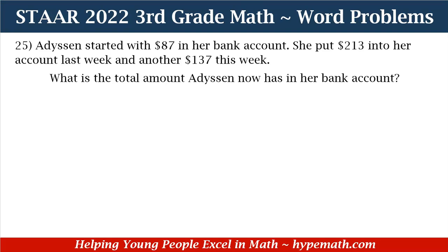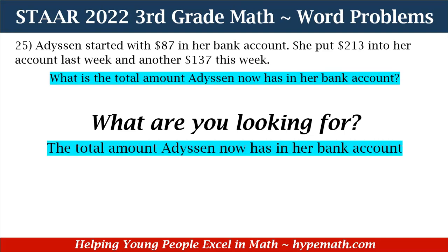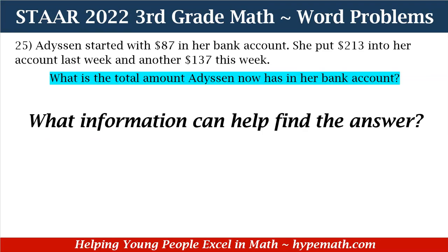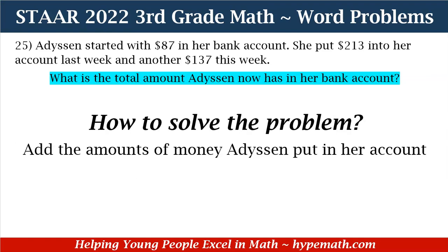In order to solve this problem, we're going to ask ourselves: what are we looking for? We are looking for the total amount — we know what that means, we're going to add. The total amount Addison now has in her bank account. The information that can help us find the answer: one, Addison started with $87 in her bank account; two, she put $213 in her account last week; and three, she put $137 in her account this week. We need to add the amounts of money Addison put into her account.